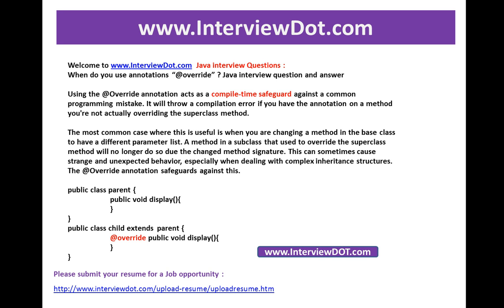The most common case where this is useful is when you are changing a method in the base class to have a different parameter list. A method in the subclass that used to override the superclass method will no longer do so due to the changed method signature. This can sometimes cause strange and unexpected behavior, especially when dealing with complex inheritance structures. The @Override annotation safeguards against this.